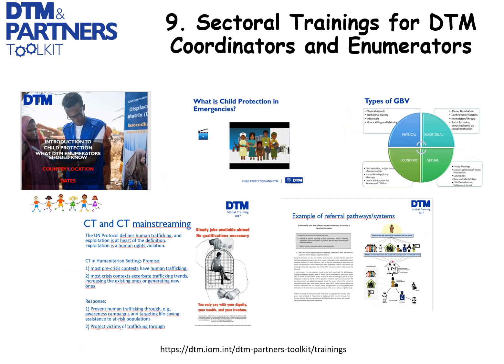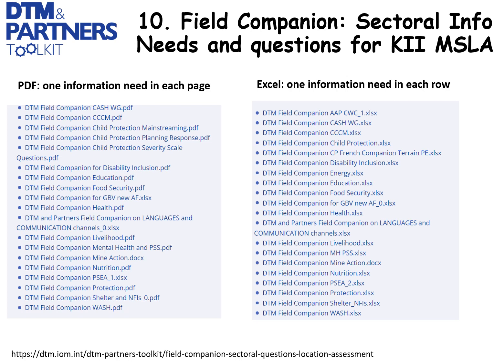One of the great moments of cooperation between DTM and Partners is through specific sectoral training for DTM coordinators and enumerators. Examples of this training developed by Partners and DTM are available on the toolkit under the trainings section. Finally, the DTM and Partners field companion is where you can find sectoral information needs and questions formatted as a data analysis plan for key informant interviews. DTM and Global Clusters, Global AORs, and Global Working Groups have worked to develop a set of most commonly needed information, phrasing of questions in English, options for answers, and other useful information. This is a great starting point that helps save time and increase good cooperation between DTM and Partners.